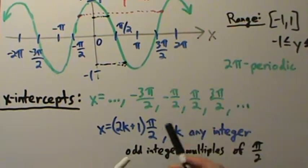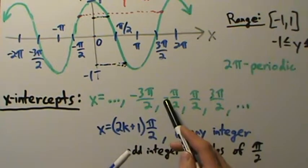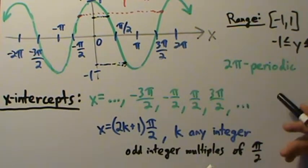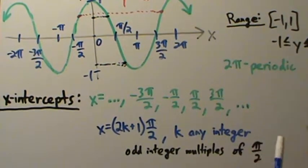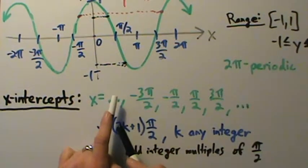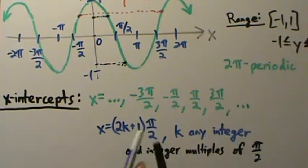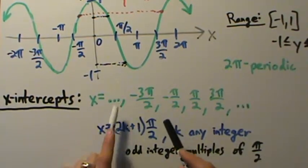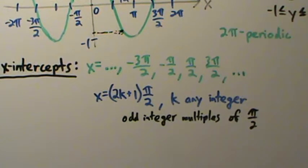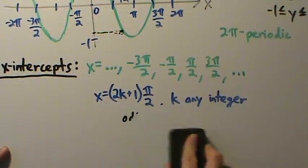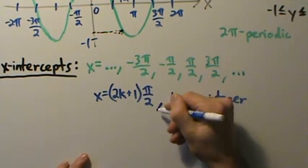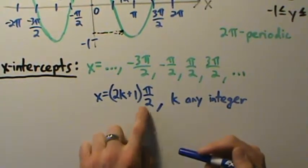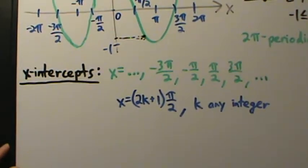Continuing the pattern: negative 3 times π/2, negative 1 times π/2, positive 1 times π/2, positive 3 times π/2, positive 5 times π/2, 7 times π/2, and so on. Going the other direction: negative 5 times π/2, negative 7 times π/2, and so forth. So the x-intercepts of cosine are all the odd integer multiples of π/2, expressed concisely as x = (2k+1)(π/2), where k is any integer.